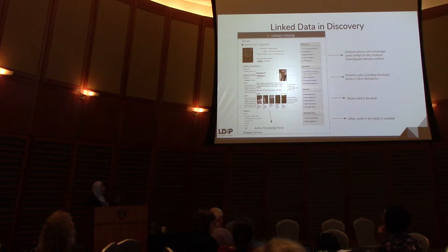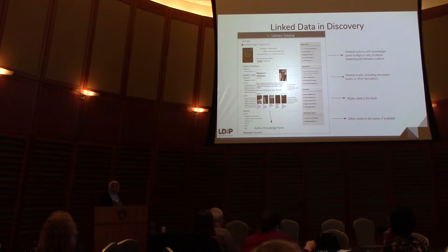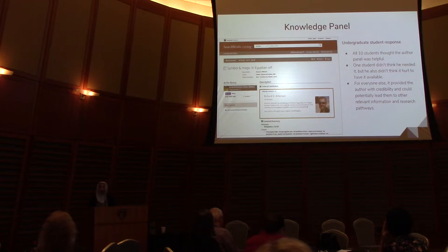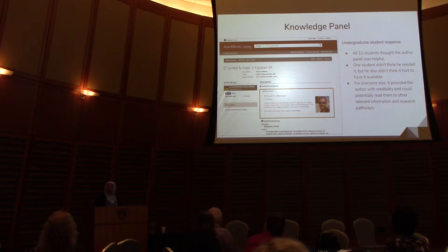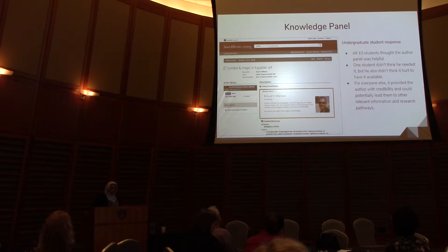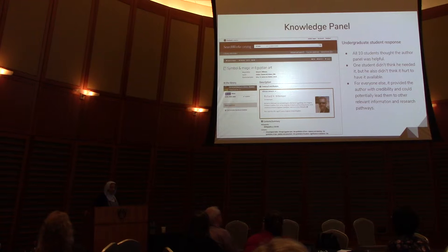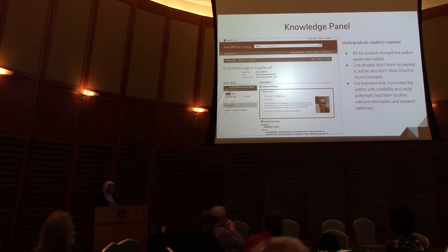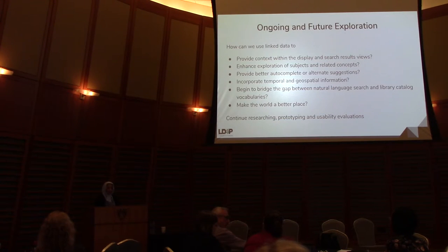There is a small knowledge panel that provides information about the author the user is looking at and the other works they have created. Astrid and Alexandra Kogman at Stanford University did some testing with knowledge panels with undergrads and found that they generally liked them quite a bit. They thought that having not just a picture but some contextual information about the person — their research, what they're doing — provided credibility and allowed them to see what other navigation pathways they could take. That's a quick recap of the UX work we've done so far.